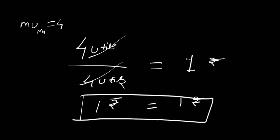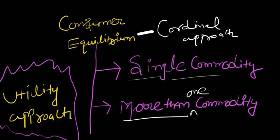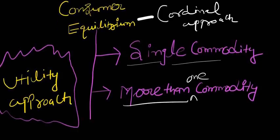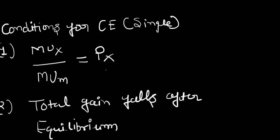Let us understand Marshall's model more deeply. This model is known as the cardinal approach, or cardinal model, for the simplest reason that utility is being measured in terms of cardinal numbers. There are two possible cases: one is for a single commodity, and the other is for more than one commodity. This video covers the single commodity case. There are two conditions for consumer equilibrium: first, marginal utility in terms of money must equal the price of the commodity; and second, total gain must fall after equilibrium.